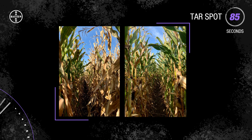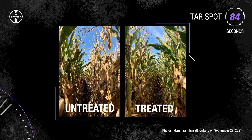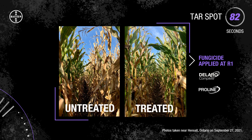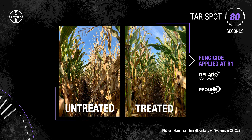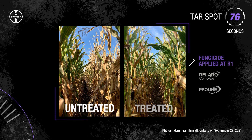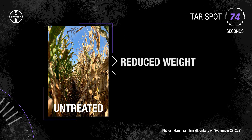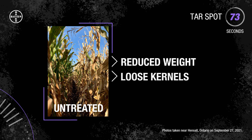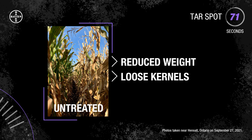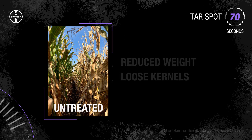Depending on the date of infection, the spores can proliferate on the plant's leaves and cause reduced photosynthesis, which can lead to stalk cannibalization, premature dry down, and poor standability. Affected plants can have yield losses ranging from 5 to 40 bushels per acre depending on how early infection begins.